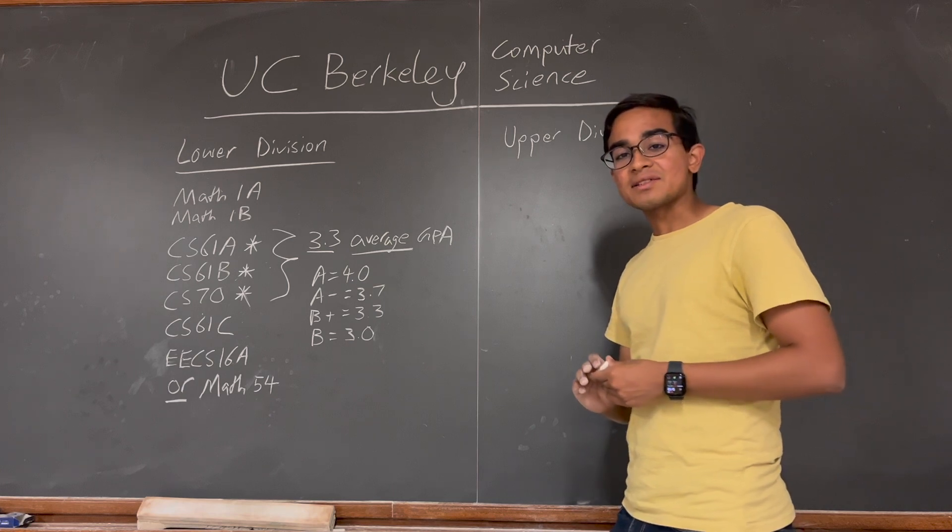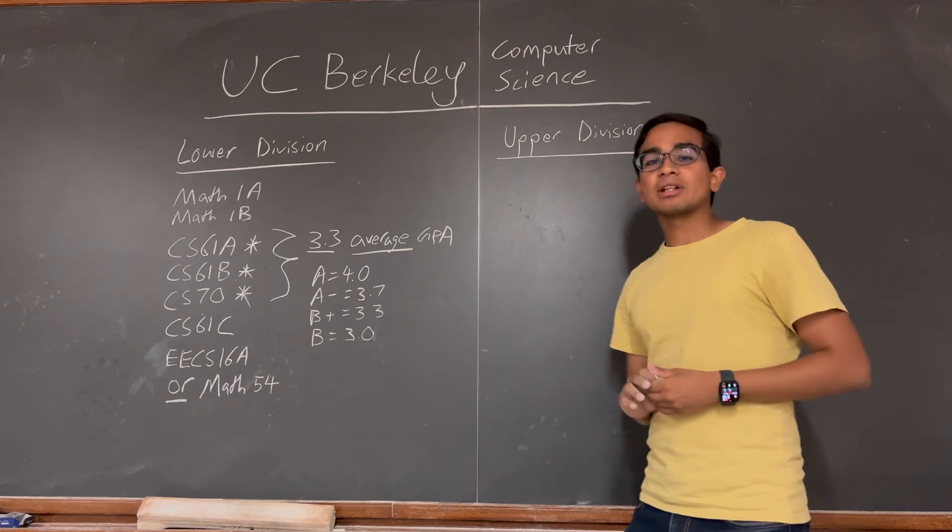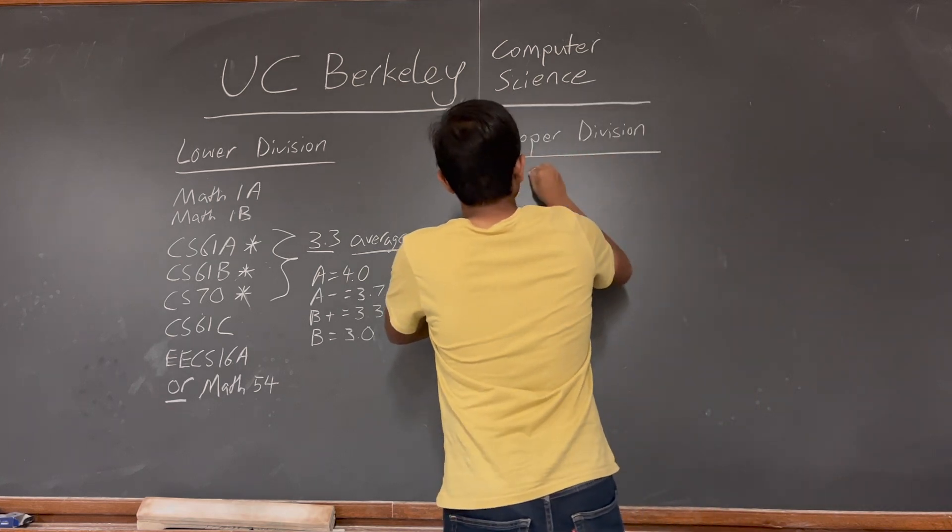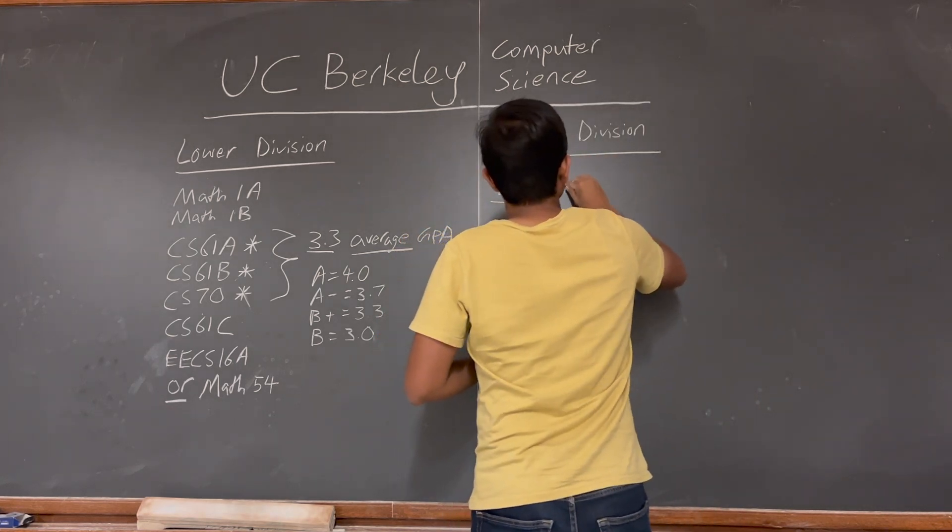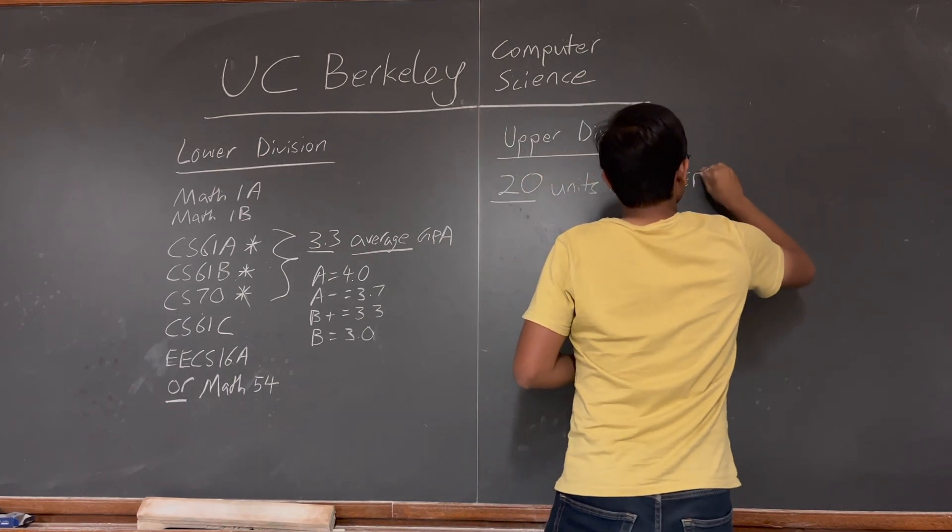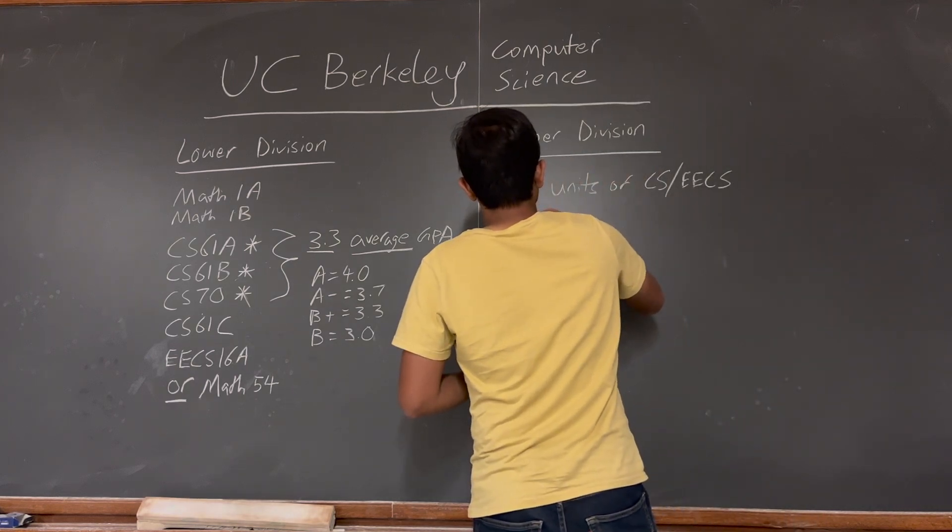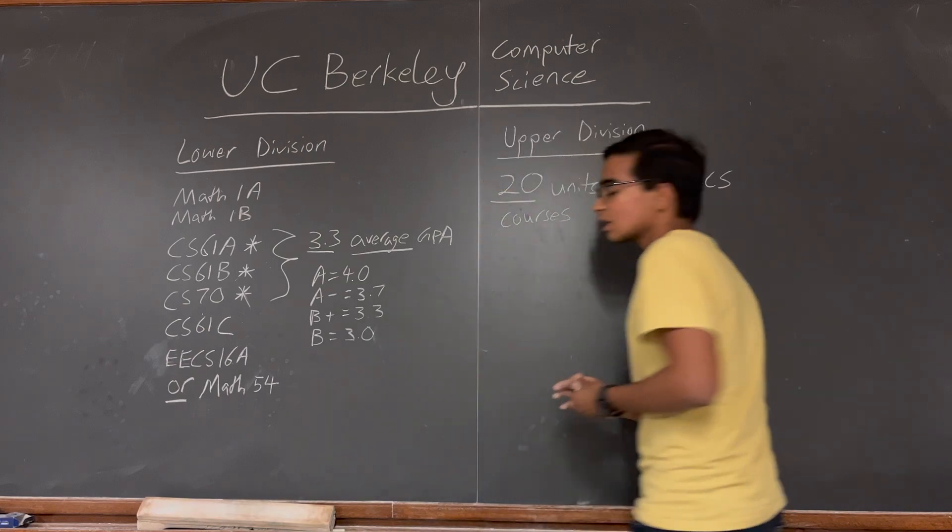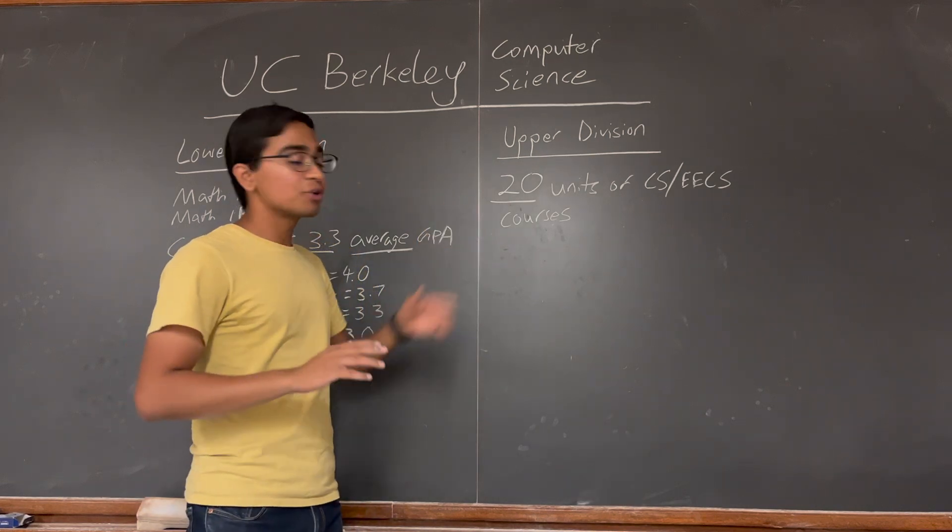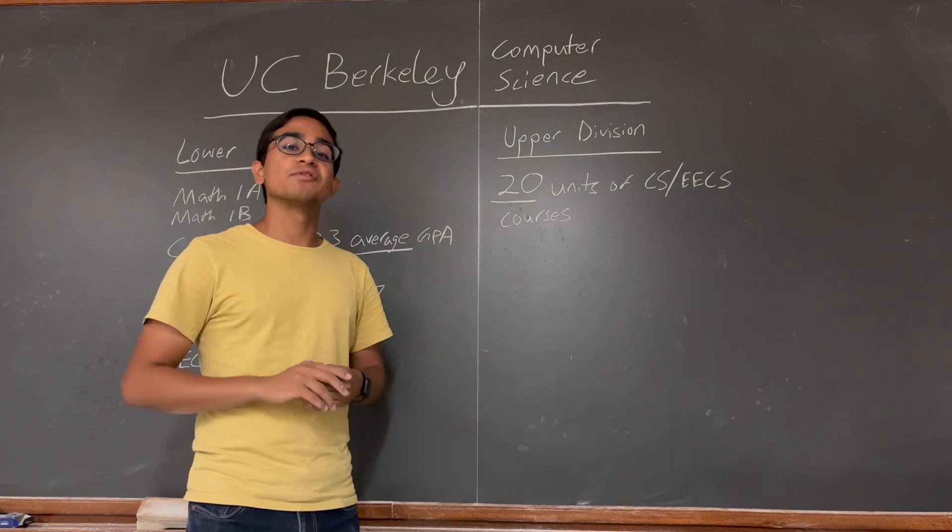Now let's move on to the upper division classes. There are many upper division classes you can take at Berkeley. So I'm going to tell you about the requirements. You have to take 20 units of CS or EECS courses for the upper division requirement. Each CS class is typically 4 units. So this equals to 5 CS classes.